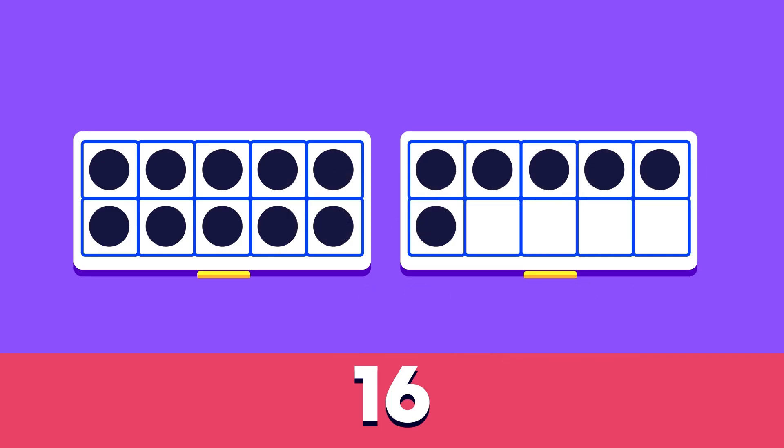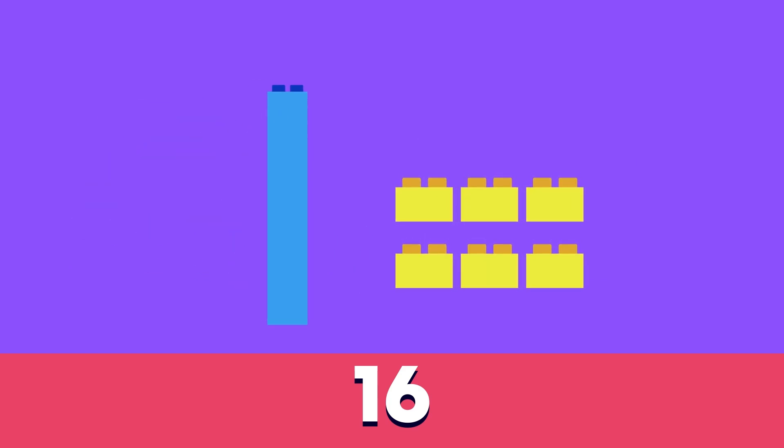There were 16 ducklings so we start by showing 16. We can use a tens frame like this. 16 has one 10 and six ones.